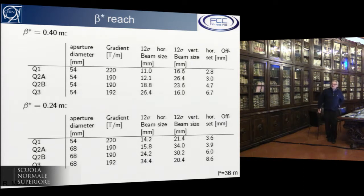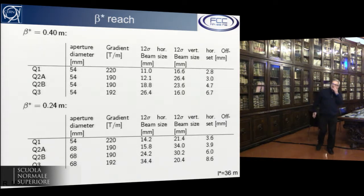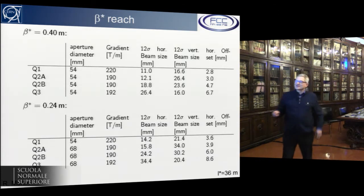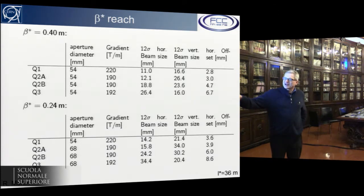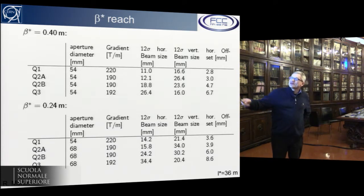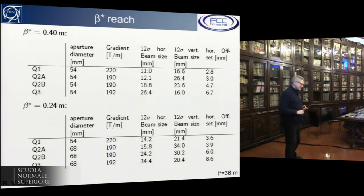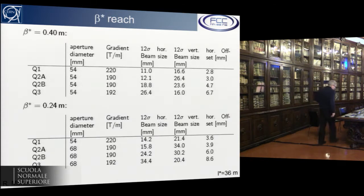For a 36-meter L-star, things look quite good. By varying the aperture of the final quadrupoles, one can reach a beta-star of 0.24 meters, which is much smaller than the baseline of 1.1 meters.